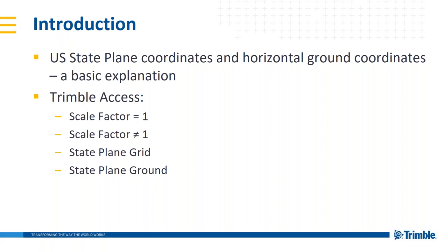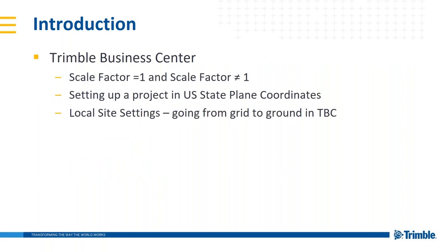We'll take a look at Trimble Access. Field software and office software go hand-in-hand — if we understand how to set things up properly in the field with our data collector, we're going to understand how to set things up in the office. In Access, we'll look at four different ways to set up the data collector: using a scale factor of one, a scale factor not equal to one, setting up a job using state plane grid coordinates, and state plane ground coordinates.